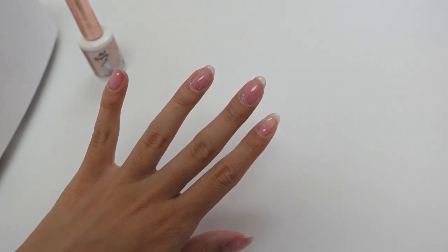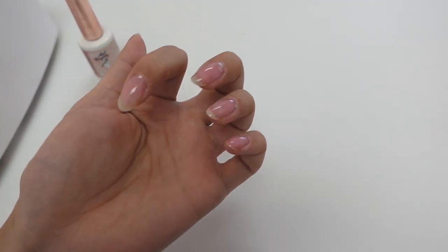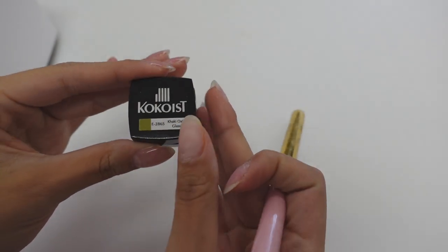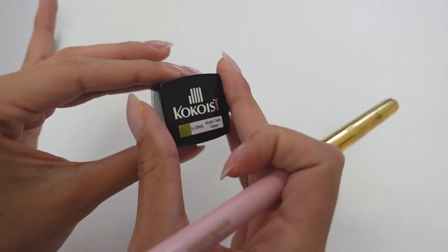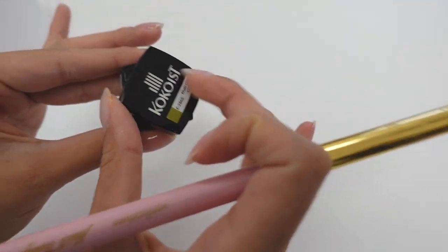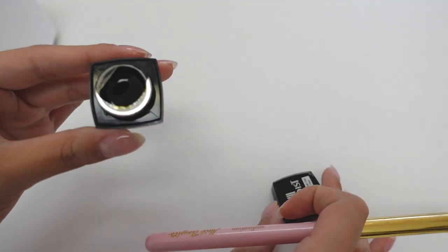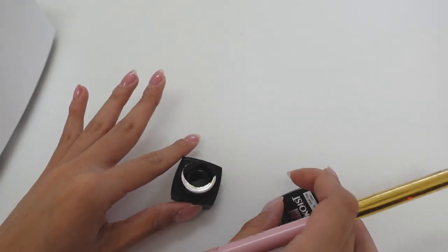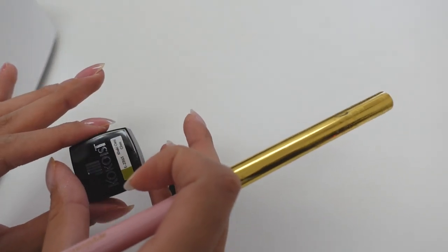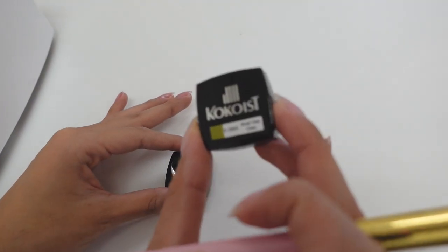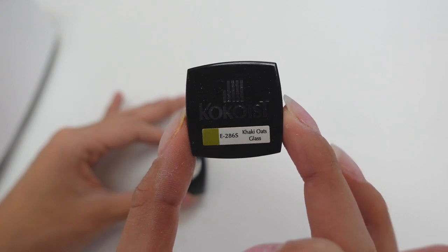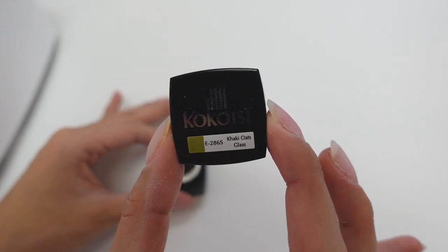And we are ready to move on to color. I'm going to be using our newest color, the khaki oats glass on my fingers. It is a beautiful sheer glassy khaki color. It's a little bit of like a Shrek ogre green, I would say, but it's one of my favorites of the new collection.